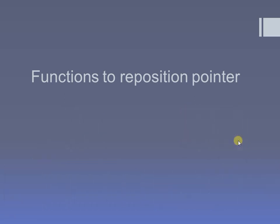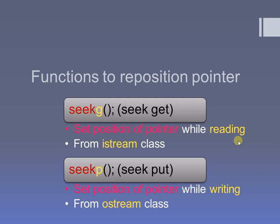Now let's start with the set position pointers in detail. Seek means set position of file pointer. G stands for the input functionality, which is reading — so we use the istream class. The other function is seekp — seek put — where p stands for the output functionality, which is writing — using the ostream class. So seekg is for setting the position of pointer for reading, and seekp is for writing.